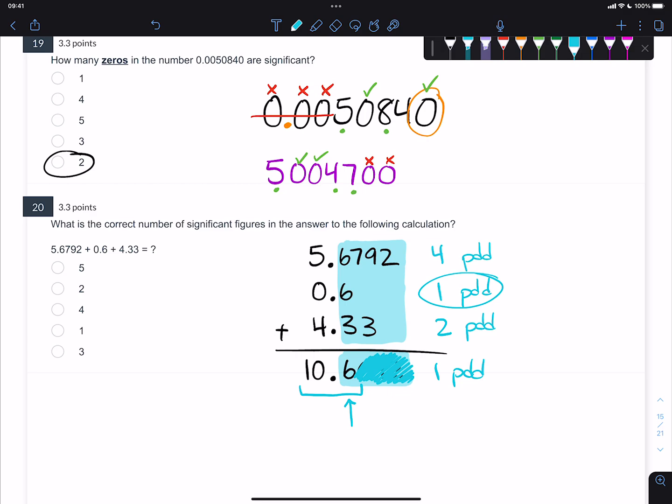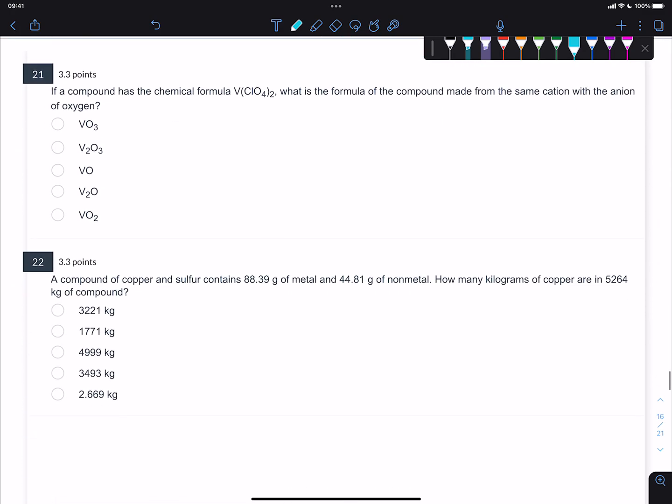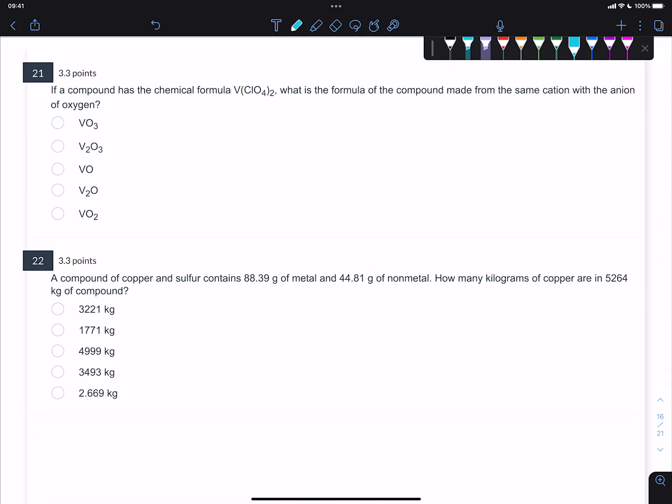This question says if a compound has the chemical formula V(ClO4)2, what is the formula of the compound made from the same cation with the anion of oxygen? This one's interesting because you've got to know a couple of things. First, it says the same cation, which means it's going to be the same oxidation state or charge on this vanadium. So let's write out the formula V(ClO4)2. These are all the actual atoms, by the way. One formula unit has a vanadium, a chlorine, and four oxygens.